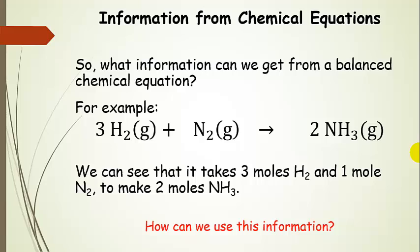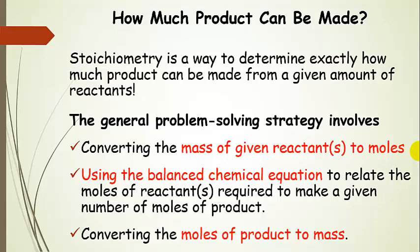Let's look at our chemical equation and think about moles. It takes three moles of hydrogen gas plus one mole of nitrogen gas to get two moles of ammonia gas. Our big question is: how much product can be made? Stoichiometry is a way to determine exactly how much product can be made from a given amount of reactants.